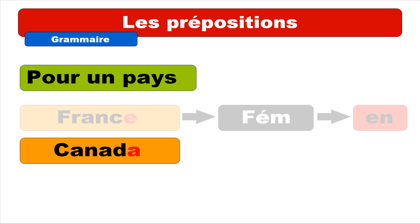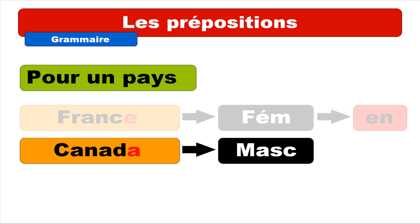Let's take an example with Canada. What you can see is it's ending with A, but the most important thing is that it's not ending with E as with France. So it does mean that this country is masculine, and the preposition you will have to use is AU — you write it A-U, but you pronounce it 'O'.